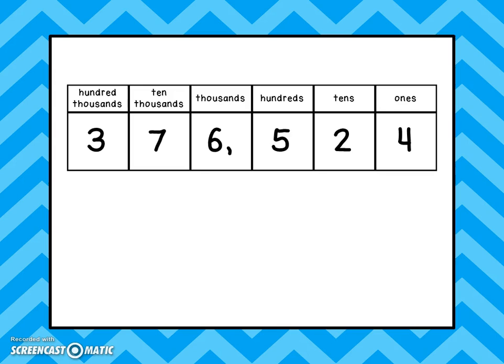The six is in the thousands place — six groups of one thousand, or six thousand. The seven is in the ten thousands place, or seventy thousand — seven groups of ten thousand. And the three is in the hundred thousands place — it's three groups of one hundred thousand.